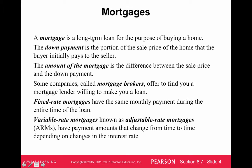A mortgage is a long-term loan for the purpose of buying a home. A down payment is the portion of the sale price that the buyer initially pays to the seller. The amount of the mortgage is the difference between the sale price and the down payment. For example, if you want to buy a home for $200,000 and make a down payment of $20,000, the mortgage would be $180,000.